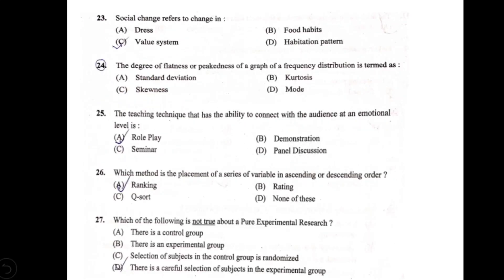Social change refers to change in — options: A) dress, B) food habits, C) value system, D) habitation. Dress and food habits can change, but social change specifically refers to the value system. Option C is correct.